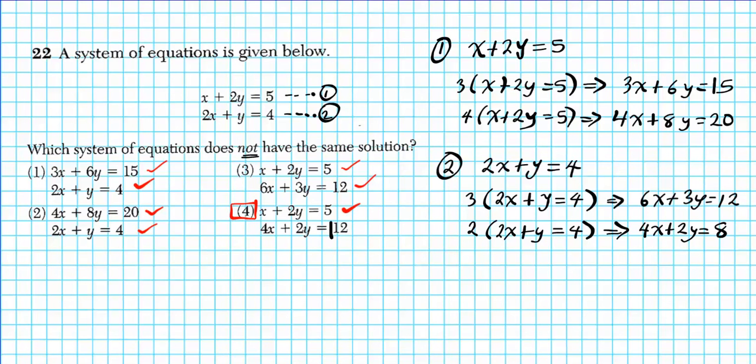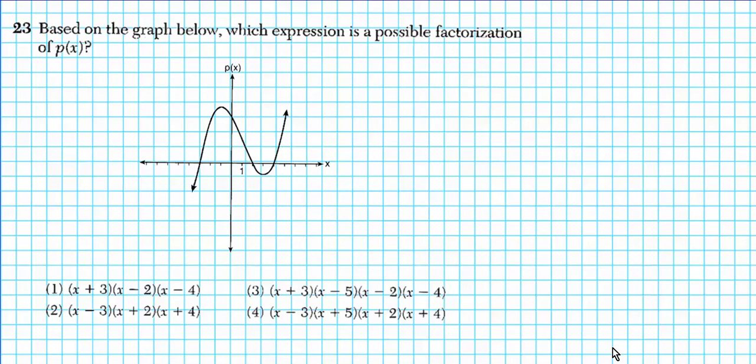4x + 2y = 12. So this, ladies and gentlemen, is a problem. If this were 8, then it would have the same solution as this, but it's not. So the only system that does not have the same solution as this is option 4, because the second equation is not an integer multiple of the second equation in the system of equations.